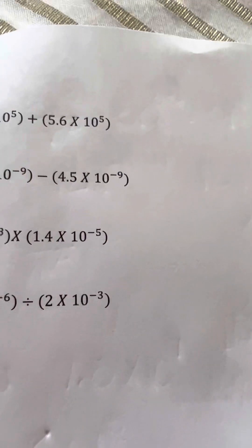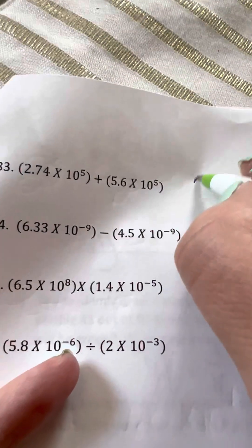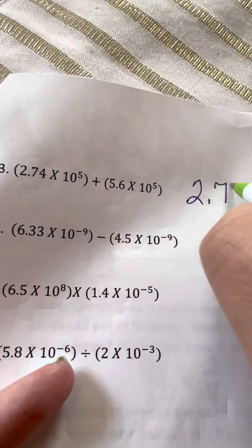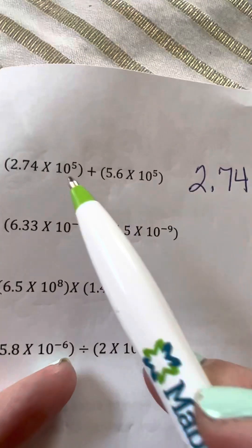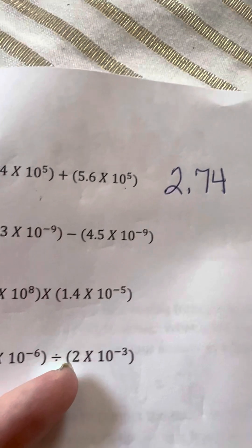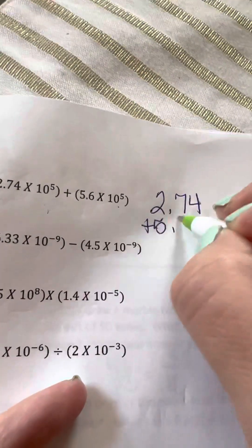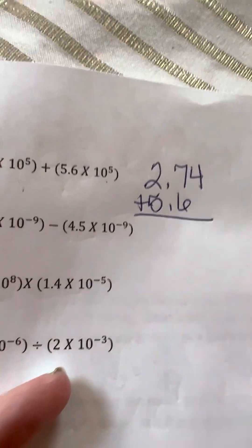All right, finishing up with this review for my honors friends. Here is 2.74 times 10 to the 5th, and this is times 10 to the 5th. So they're the same. So we can just add 2.74 and 5.6. Be sure to line up those decimals.